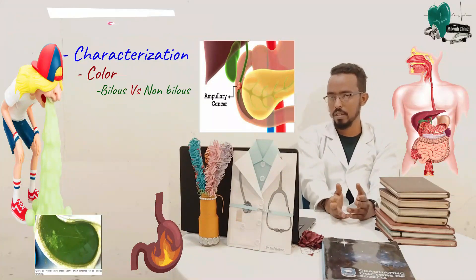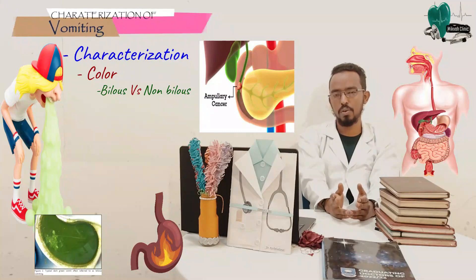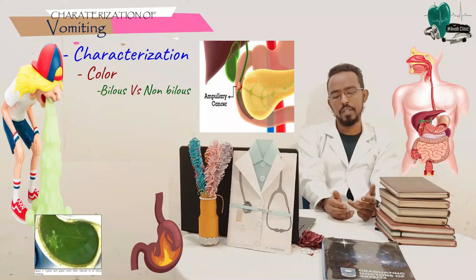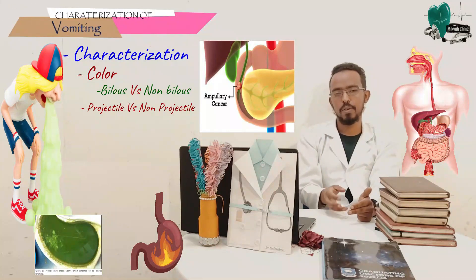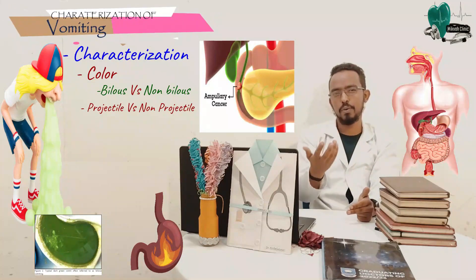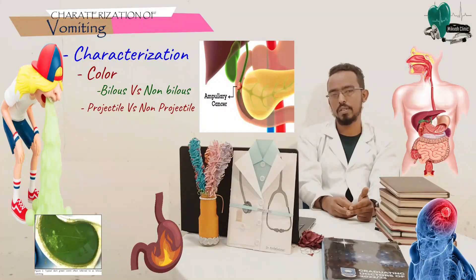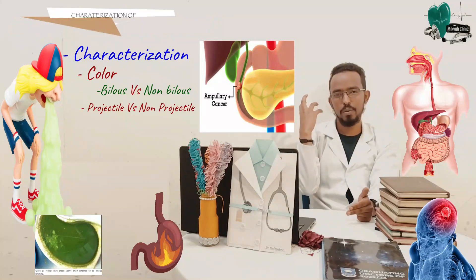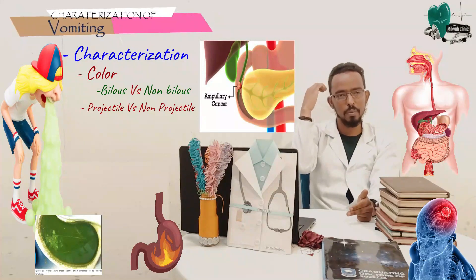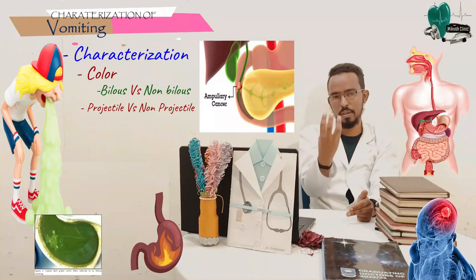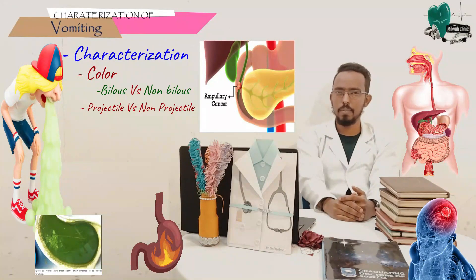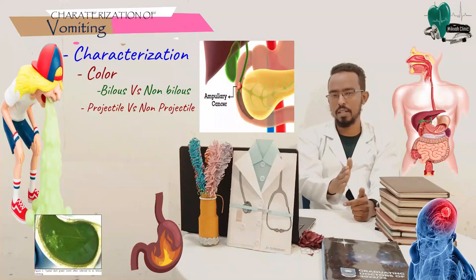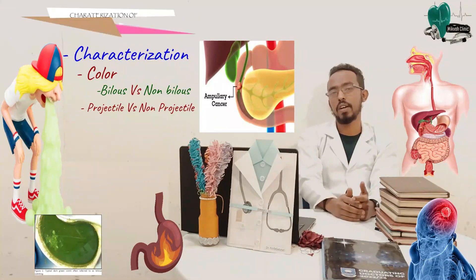The presence of blood or not in the vomiting is also important. The other thing is whether it's projectile or non-projectile. Projectile vomiting is usually associated with CNS pathology — the presence of a mass within the brain can cause compression of the brainstem, resulting in projectile vomiting. So if it's projectile, the pathology is likely not related to the GI system.